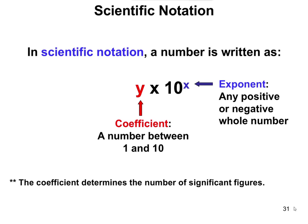Since we just talked about significant figures, one thing I want to mention about scientific notation is that the coefficient determines the number of significant figures. However many significant figures there are in the y term is going to determine how many significant figures this entire number has.